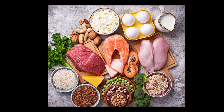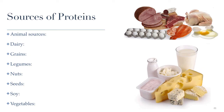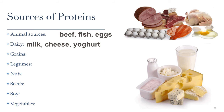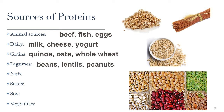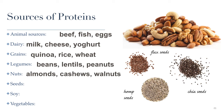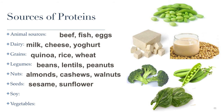Getting enough protein is important, but we can get enough from a wide variety of foods. Animal sources include beef, fish, eggs, and all milk products. Great plant sources include quinoa, oats, and whole wheat — all very rich in proteins. Legumes like beans, lentils, and peanuts are excellent protein sources. Nuts like almonds, cashews, and walnuts, as well as seeds like sesame and sunflower, are all excellent protein sources. Soy products are also very well known for being good protein sources, especially tofu, which as mentioned is a complete protein, along with soy milk and edamame. High-protein vegetables include peas, spinach, and broccoli.